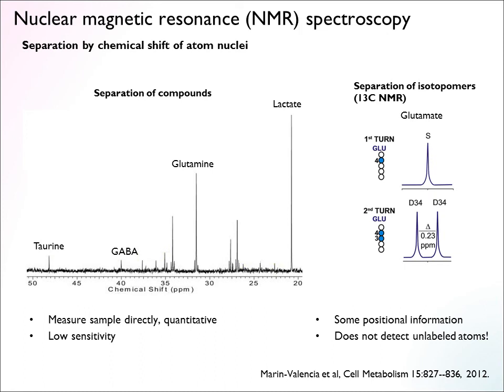A problem with using NMR for isotope information is that by principle it doesn't detect the unlabeled atoms — 13C NMR is based on the properties of the 13C atoms themselves, so completely unlabeled species never show up. That means you don't get complete MIDs, because you don't get the full distribution of all isotopomers — only some of them and their relative proportions. So there are pros and cons, but NMR is a nice complementary method to mass spectrometry. The data shown here is from a paper by Ralph Deberardinis' group, a really nice paper looking at isotope tracing of glucose in brain tumors.